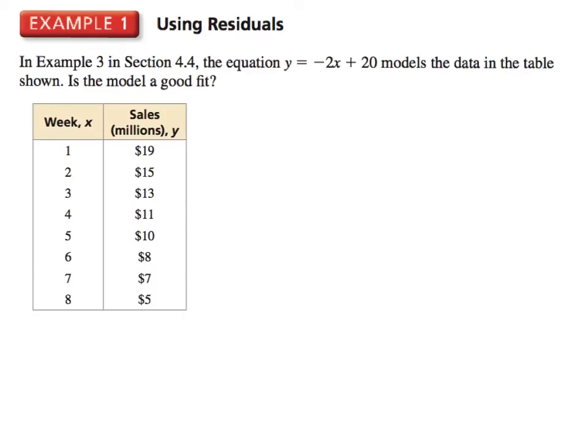Now before you're completely confused, we're going to go over example one, which we're going to use residuals. I'm thinking this is going to help you understand what we're doing. So in example three of section 4.4, you don't need to know anything from that section. Basically, here's what we have. We have an equation. This equation models the data in the table shown. I want to tell you something, that this equation is what you've done before in writing something from a scatter plot. So these points, all these points, do not form a line. They form a scatter plot. This equation is just something that models it. It's the line of best fit. So we want to know, is the model a good fit?